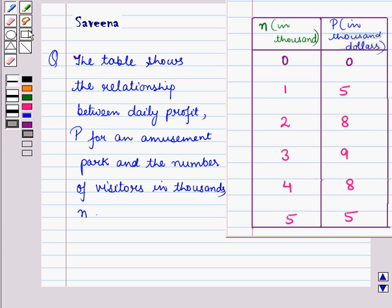Hello and welcome to the session. In this session we will discuss a question which says that the table shows the relationship between daily profit P for an amusement park and the number of visitors in thousands, denoted by N.